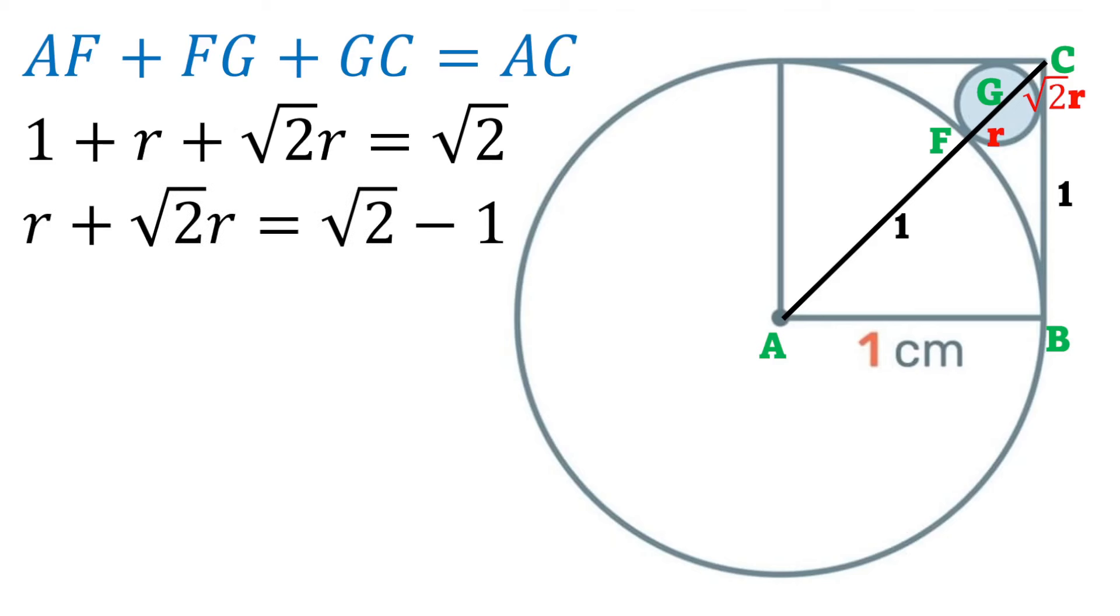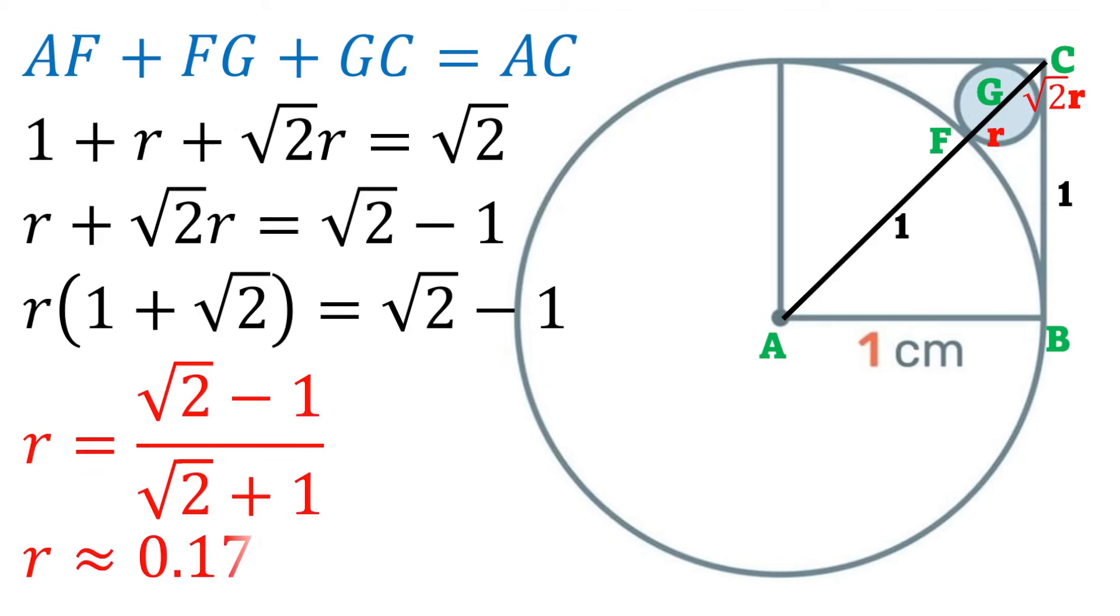Solving for r we can transpose the one and subtract it from root two. Then on the left hand side we're left with r plus root two r. We can factor out an r to have one plus root two. Then transposing that one plus root two we will divide by it and that is the answer in its exact form: root two minus one over root two plus one, or in its approximate value form 0.172 to three decimal places.